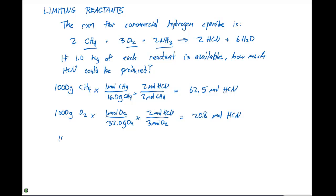Lastly, we take 1,000 grams of NH3. And for every one mole of NH3, that's going to equal 17.0 grams. From the balanced chemical equation for every two moles of NH3, we have two moles of HCN. This gives us a total of 58.8 moles of HCN.